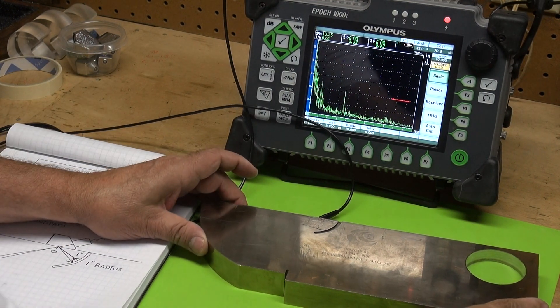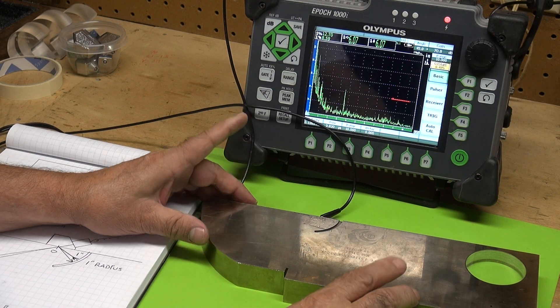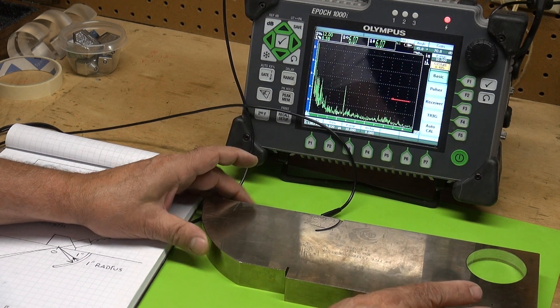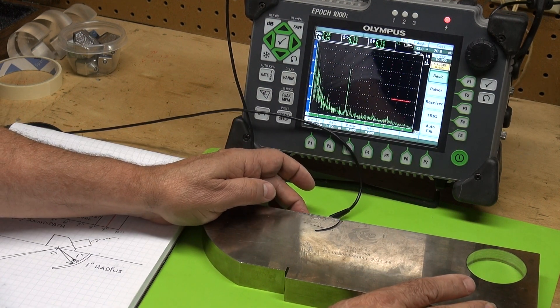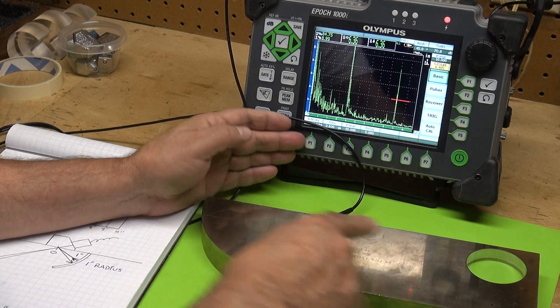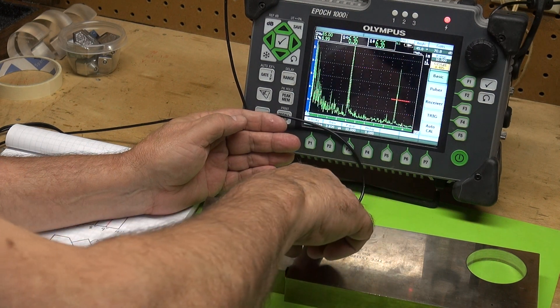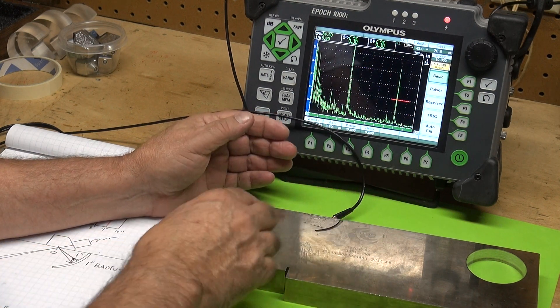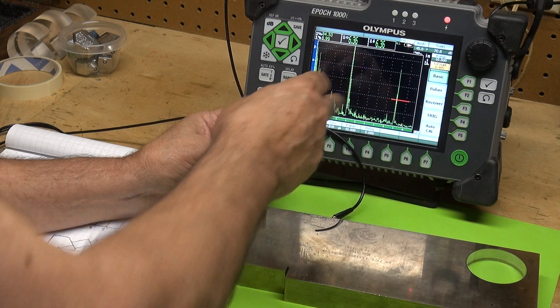I want to say a couple things about the IIW type 1 reference block. This is a block that we use to calibrate with and it has a 4 inch radius and a 1 inch radius, so we'll get a signal at 4 inches and 9 inches.